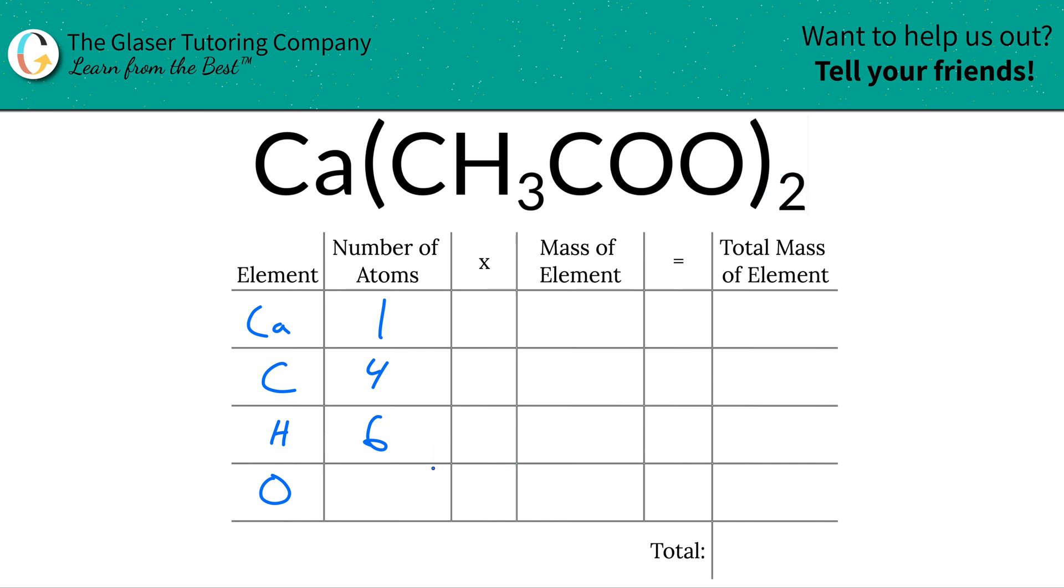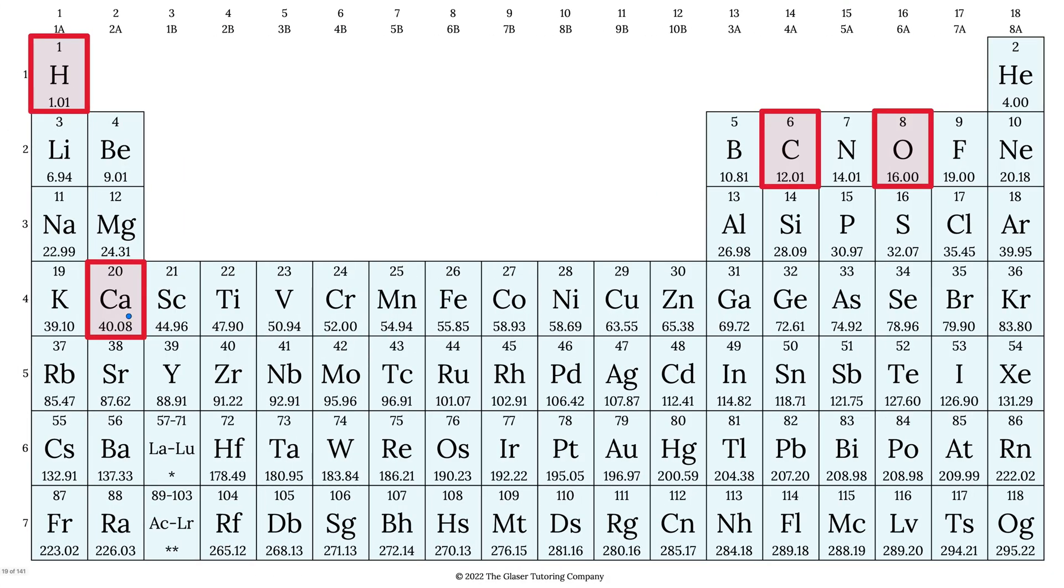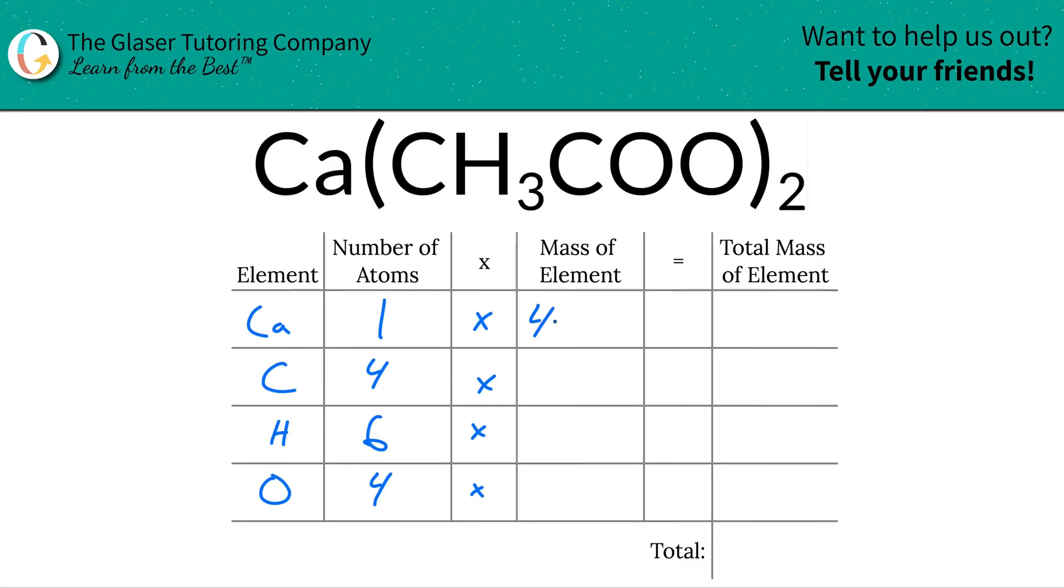Then you're going to multiply those number of atoms by the mass of each particular element, and that's where the periodic table comes into play. For calcium is 40.08, hydrogen is 1.01, carbon is 12.01, and oxygen is 16. Those masses will represent the molar mass in grams per mole if you're calculating molar mass, or the molecular mass in amu if you're calculating molecular mass.